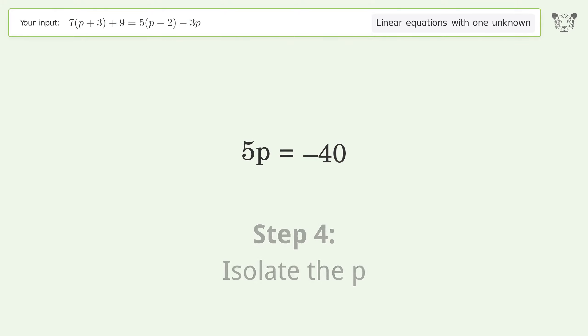Isolate the p. Divide both sides by 5. Simplify the fraction.